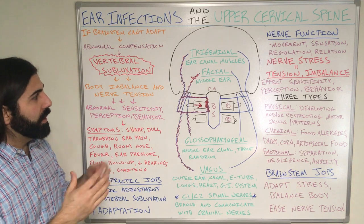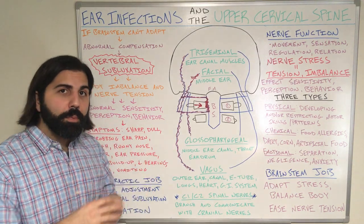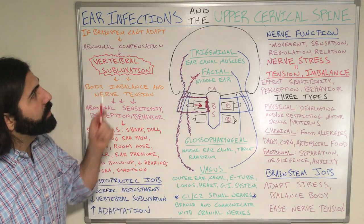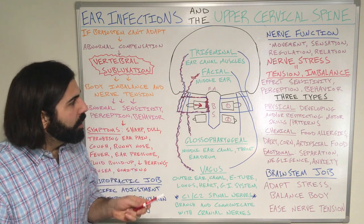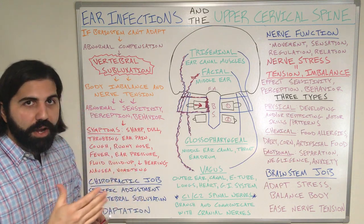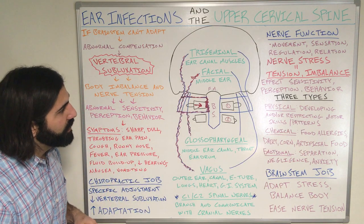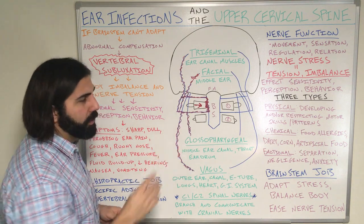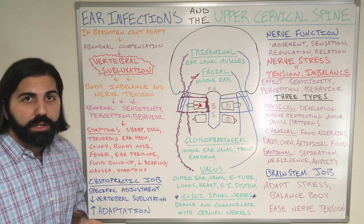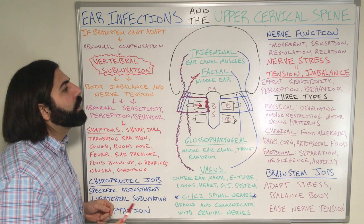As always, to delve deeper into the connection between ear infections and the upper cervical spine, let's do a simple crash course in anatomy and physiology. First, we're going to focus on the four main structures of the upper cervical spine.